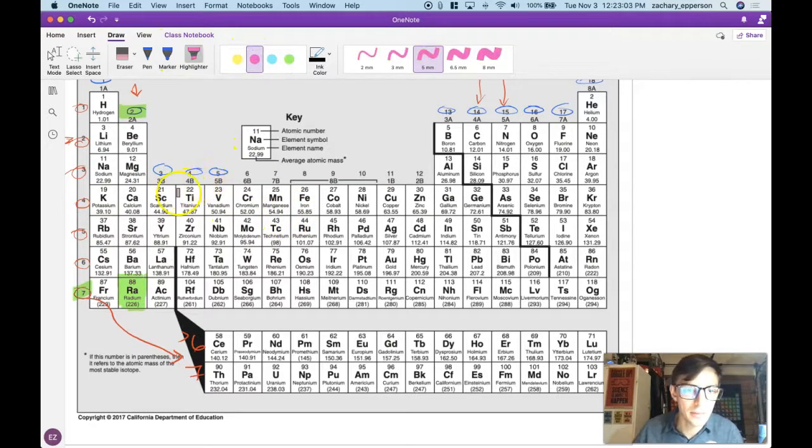How about the element that's in group 18, period two? It should be neon. And that's because group 18 is up here at the top. And period two is right there.